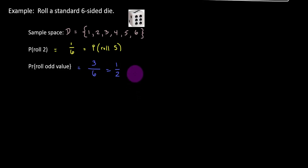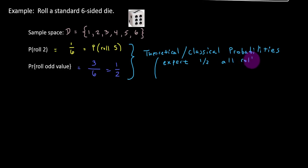A couple things to note here is that the way in which these probabilities were determined are based off of theoretical or sometimes called classical probabilities because it's based on one long-term expectation, right? We would expect half of all rolls to result in an odd number. Or we expect every one in six rolls to be a two. So that's based on that long-term expectation.